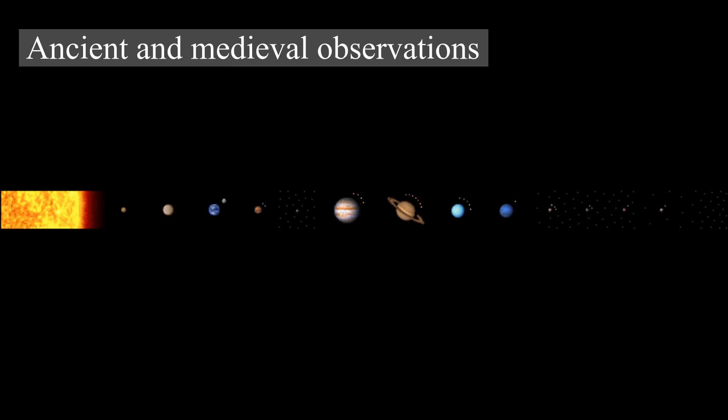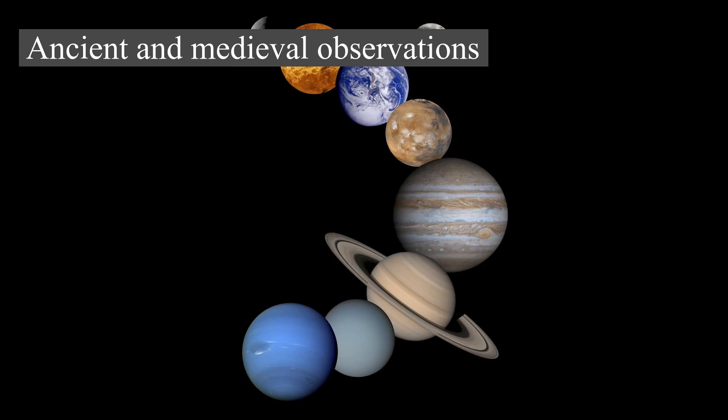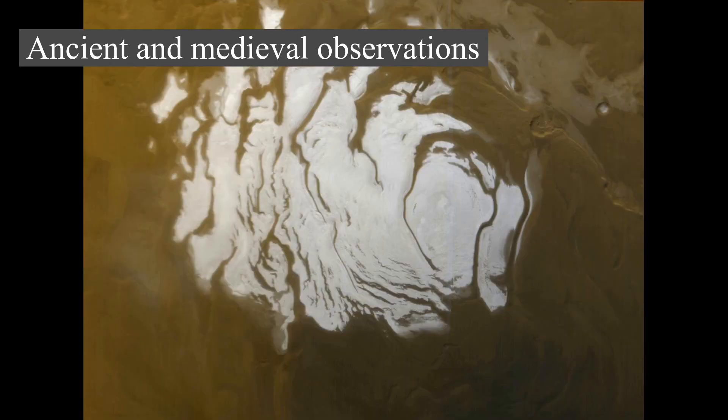When the telescope became available, parallax measurements were first performed by Giovanni Domenico Cassini in 1672, though early measurements were hampered by the quality of instruments. In 1610, Mars was viewed by Italian astronomer Galileo Galilei, who was the first to see it via telescope. The first person to draw a map of Mars that displayed any terrain features was the Dutch astronomer Christiaan Huygens.